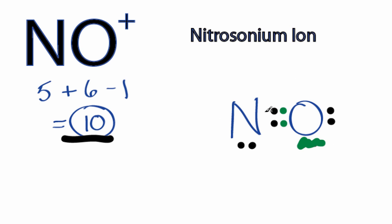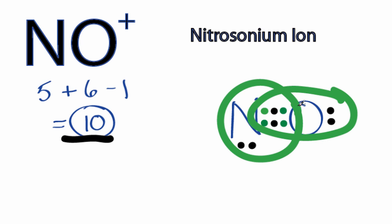We'll move these 2 here into the center. So now the oxygen has 8, and the nitrogen also has 8. So we've fulfilled the octet for both those atoms in the NO plus Lewis structure.